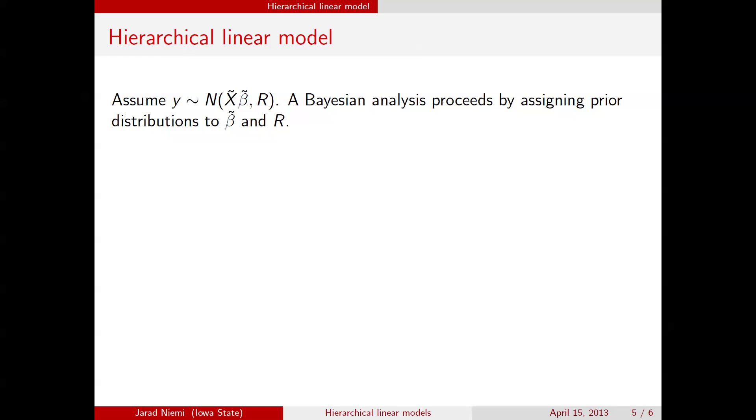So the prior for beta tilde that we're going to consider, we're going to be doing it in two parts. We're going to consider the two components. There's a beta component, these are the fixed effects, and there's a U component, the random effects. And so the priors that we assume here are both that they're normally distributed. Beta here has a prior with mean beta naught, and variance-covariance matrix sigma beta. U, on the other hand, has a mean of 0, and a variance-covariance matrix of G.